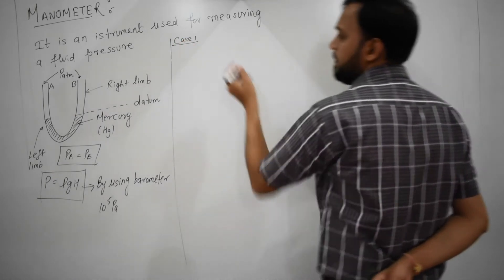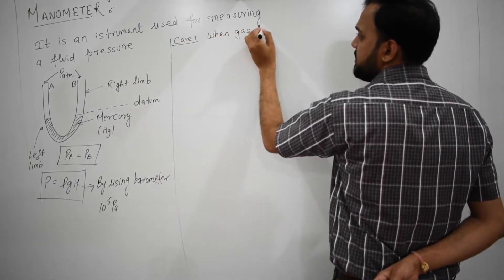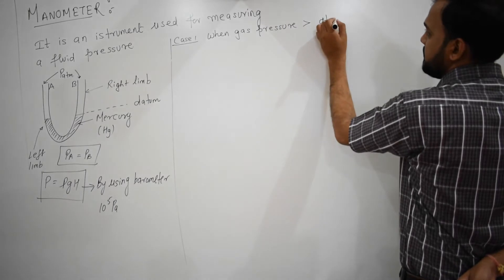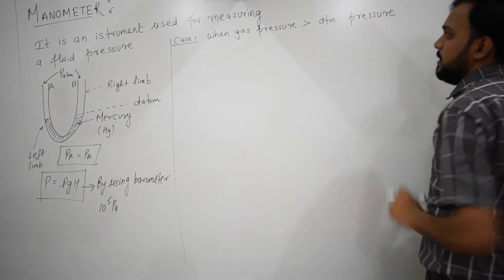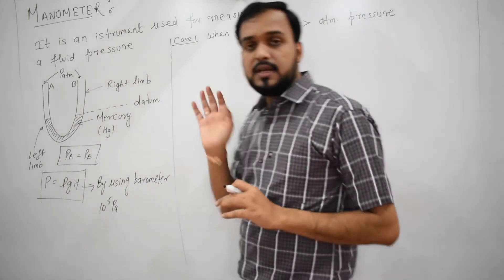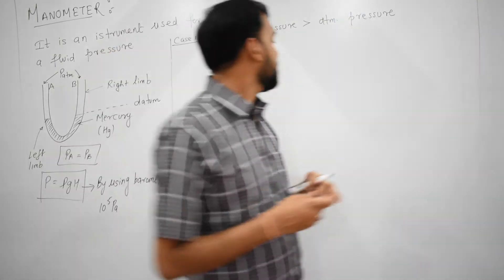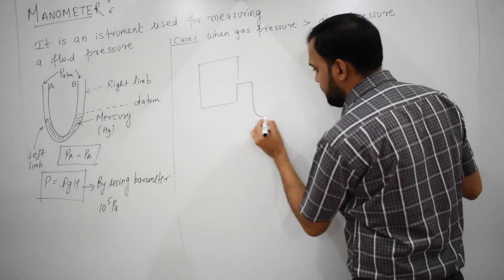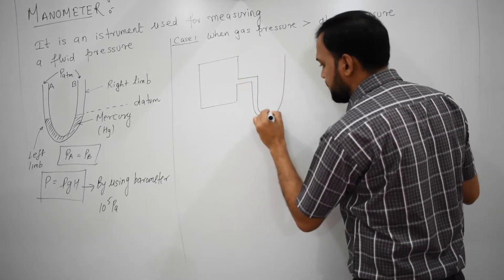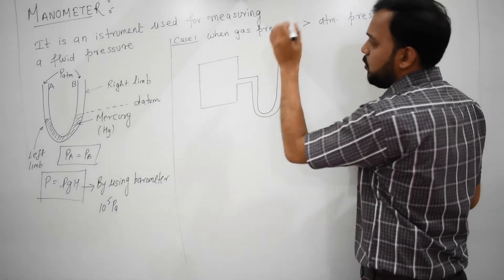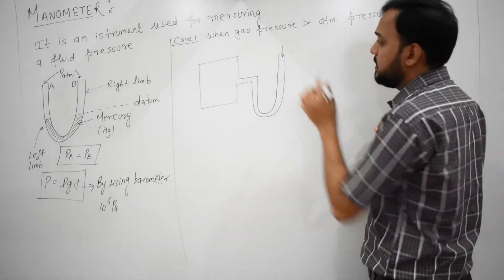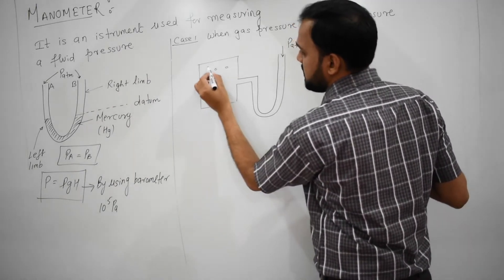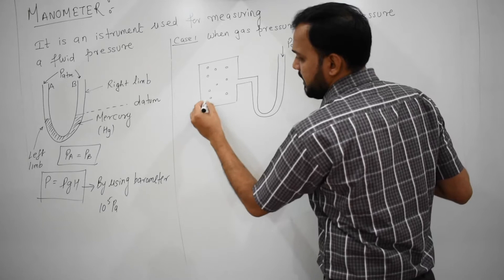Let's say case number 1: when gas pressure is greater than atmospheric pressure. If gas pressure is greater than atmospheric pressure, how can we measure the pressure of a gas? So that is our container filled with gas, and we have a U-shaped manometer connected to it. This part is open to the surrounding — it means open to atmosphere. So at this place we have atmospheric pressure, and inside the gas molecules are present, so inside we have a gas pressure.